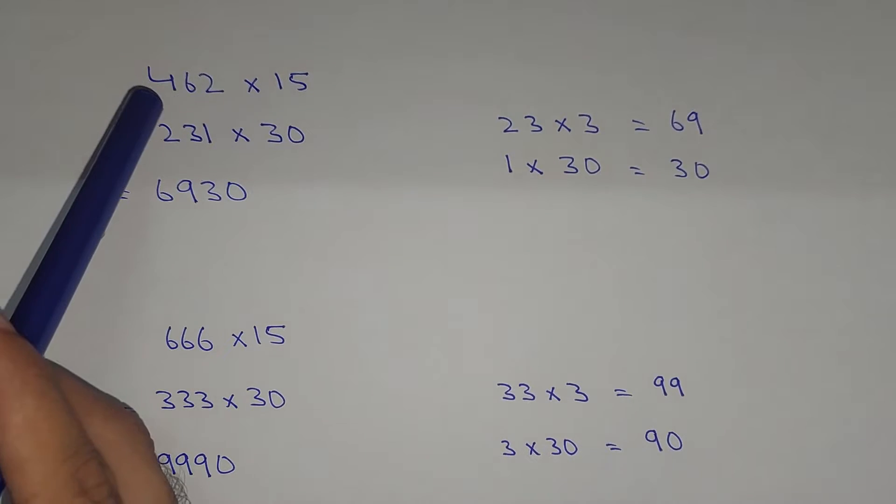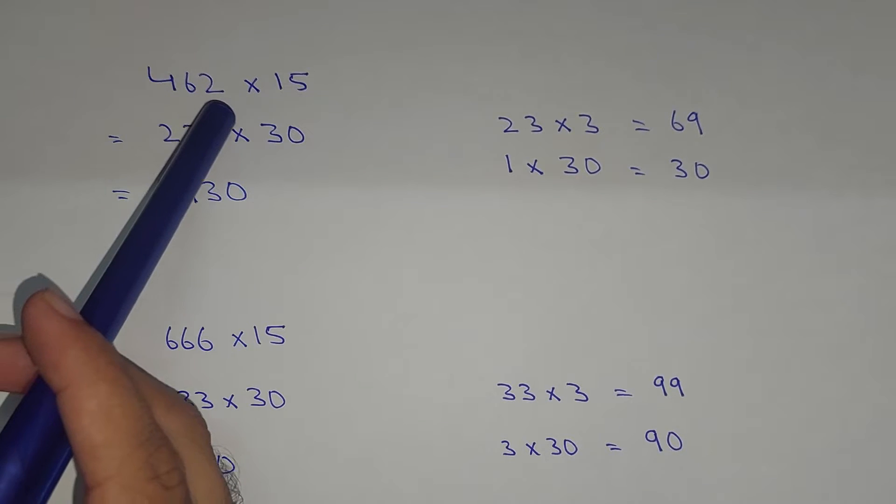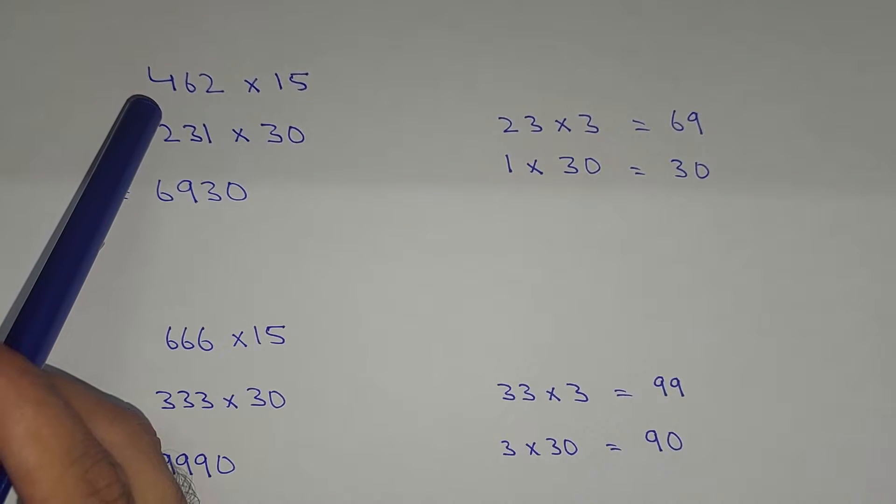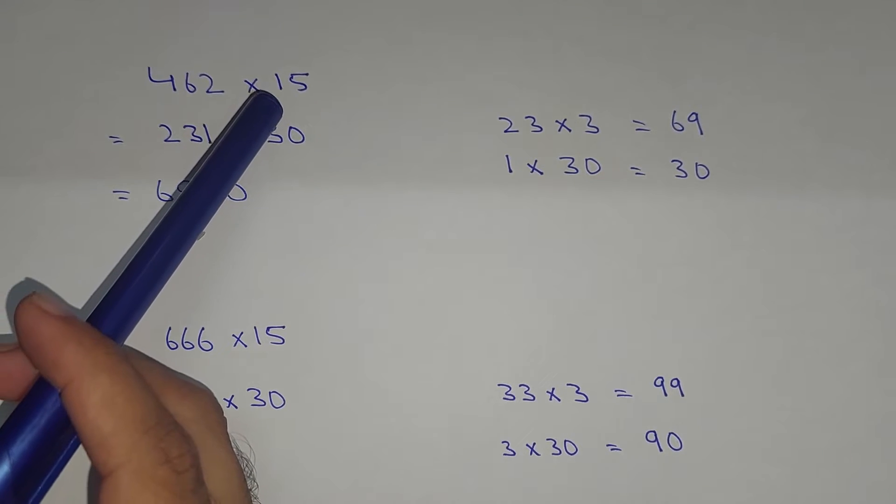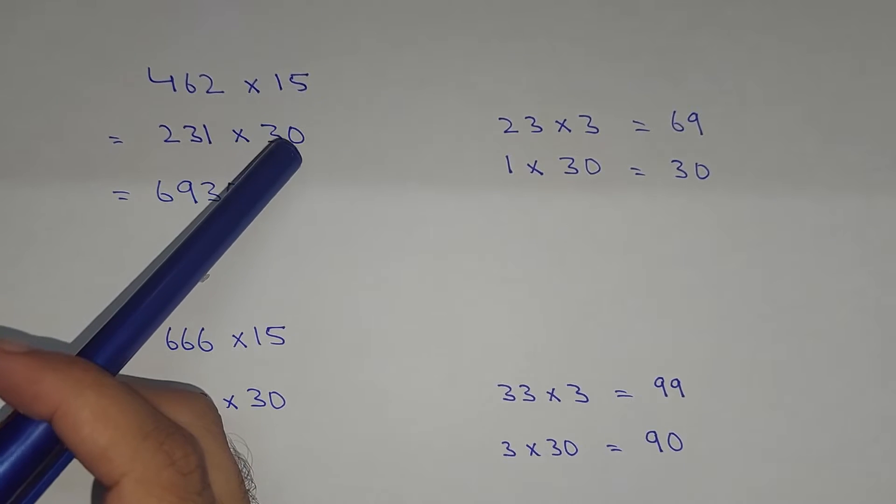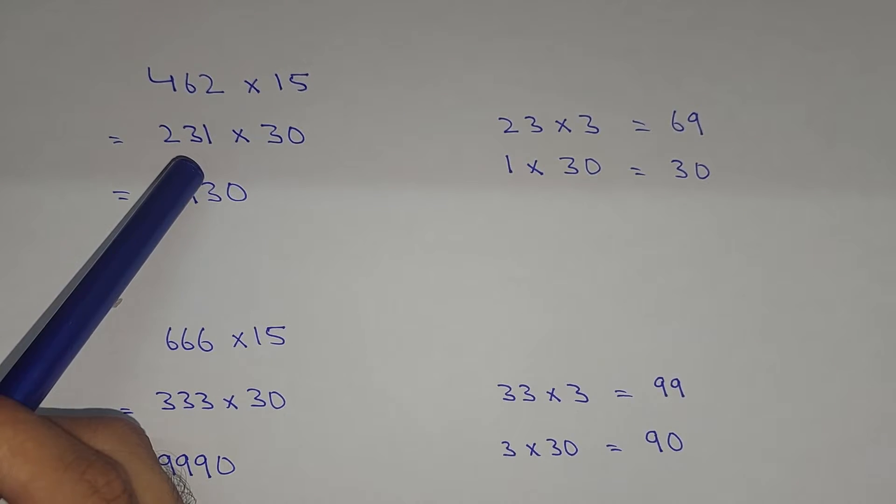For example, here we have 462 multiplied by 15. What we will do is divide the first number by 2. So 462 divided by 2 equals 231, then multiply by 30 since 15 multiplied by 2 equals 30. You know that whenever we have zeros in the multiplication, the solution is easy.